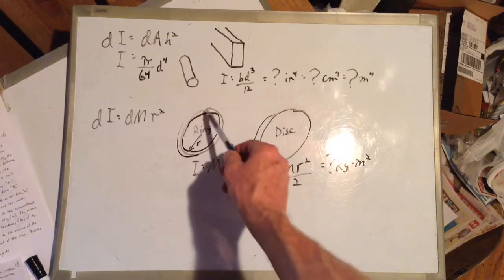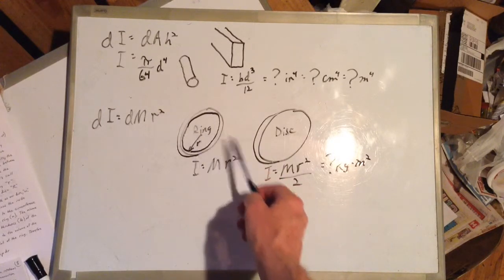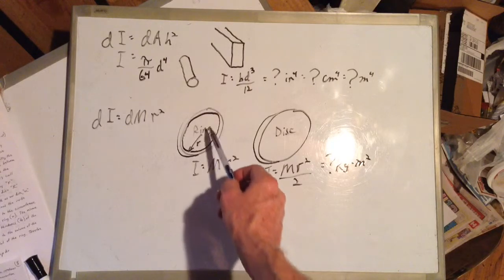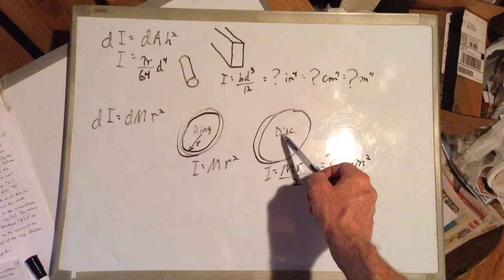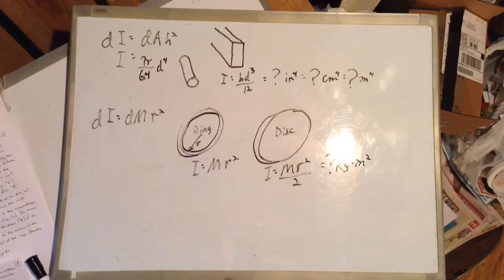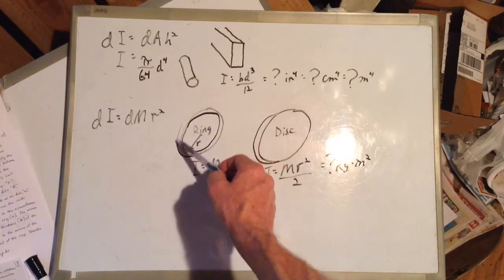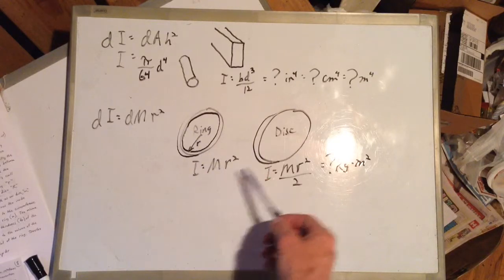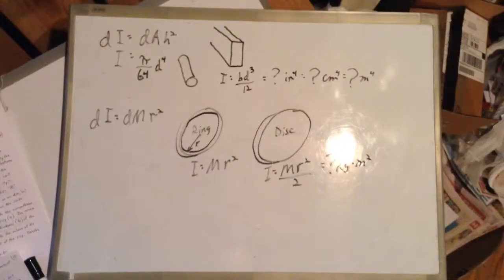If a ring is spinning on its axis, the moment of inertia of the ring is mass times the square of its radius. But for a disc it's only half that, because a disc has mass distributed from the center outward, whereas all the mass of the ring is at the rim. So if a ring and a disc have the same diameter and the same mass, the ring will have twice the moment of inertia of the disc. We don't have enough time in this lesson, but in part 3 of gyroscopic precession we'll use calculus to derive these two formulas.